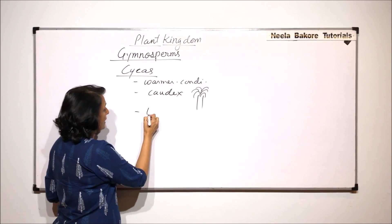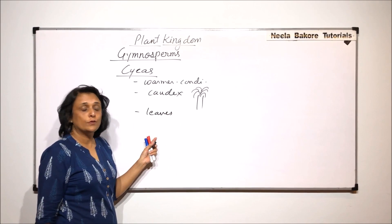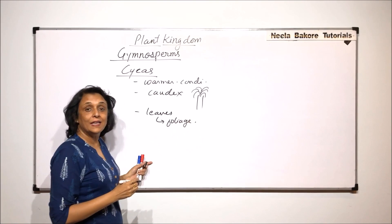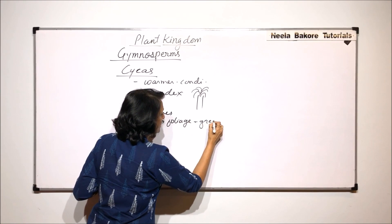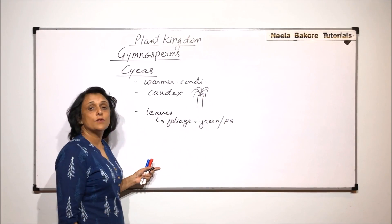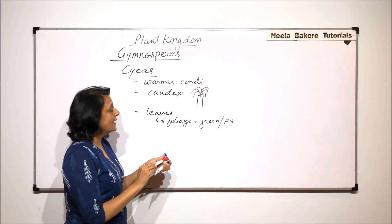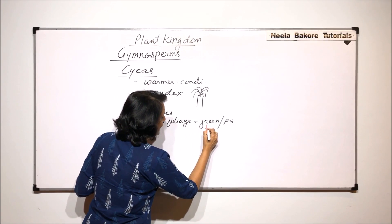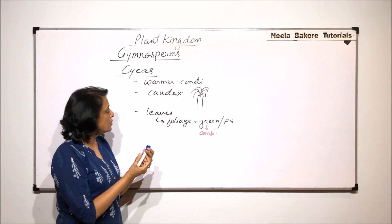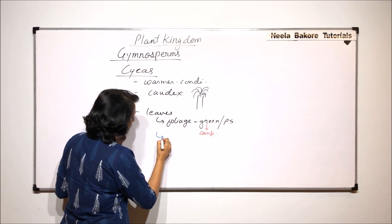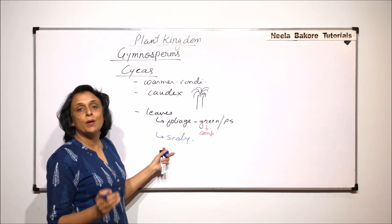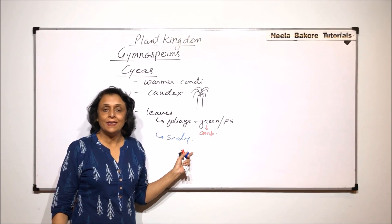The leaves are mainly of two types: the foliage leaves which are green performing photosynthesis, and scaly leaves. The leaves which we see normally are green leaves and they are compound, pinnately compound, so we see many small structures. The scaly leaves are hard brown structures which normally cover the main stem.